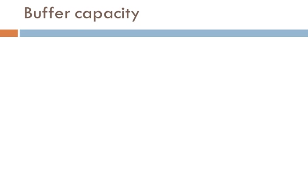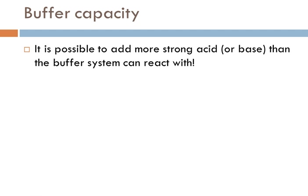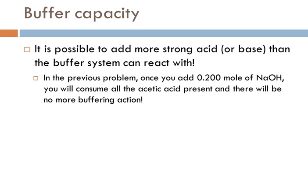The other concept is buffer capacity. In our problem we had 0.2 moles of each component. If I add too much strong acid, I'll use up all the conjugate base. If I add too much strong base, I'll use up all the conjugate acid. In that problem, adding 0.2 moles of sodium hydroxide would have used up all the acetic acid and turned it all into acetate ion — with no acetic acid left, it's not a buffer anymore. Similarly, adding 0.2 moles of HCl would have used up all the acetate ion. Buffer capacity really depends on how many moles of the weak acid and conjugate base were used to prepare the buffer system initially. If you exceed it, the buffer won't work.